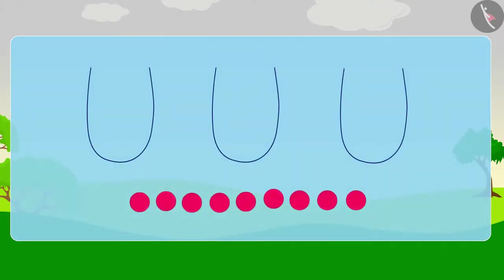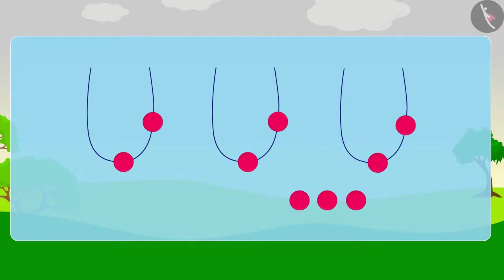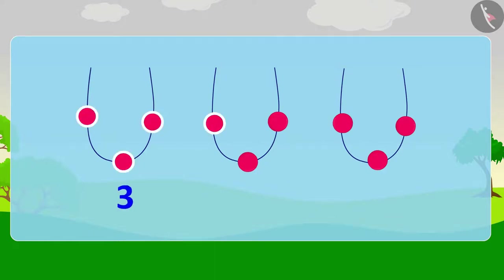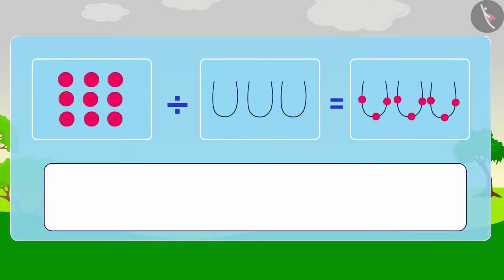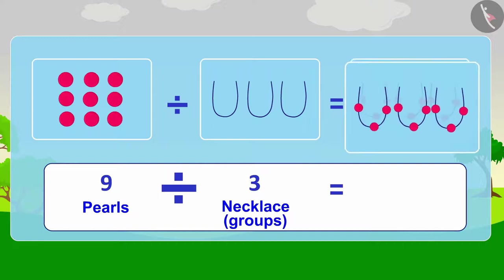Let's do it together. First, we will put one pearl in each necklace. Now we have six pearls left. Now we will put one more pearl in each necklace. Now we have three pearls left. Finally, we will put one last pearl in each necklace. Appu has no other pearls left and his three necklaces are ready. Each necklace has three pearls. In other words, Appu's nine pearls were divided into three equal groups and each group had three pearls.